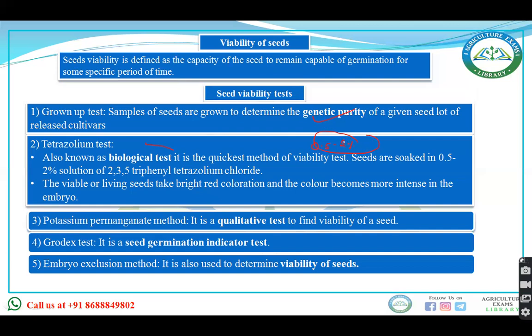Potassium permanganate method is used as a qualitative test. The godex test is a seed germination indicator test. The embryo excision test also finds seed viability and takes nearly 7 to 10 days to give results. The electrical conductivity method shows that if conductivity increases, the number of dead tissues is increasing. In the indigo carmine method, seeds are soaked and dead seeds are stained.